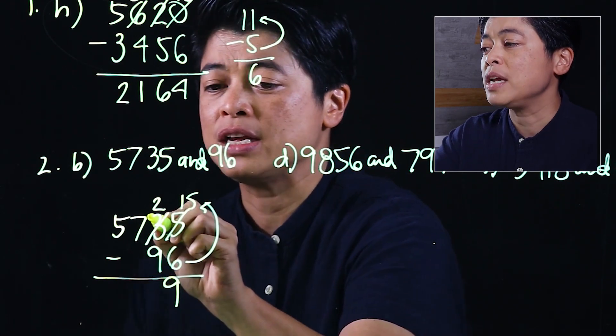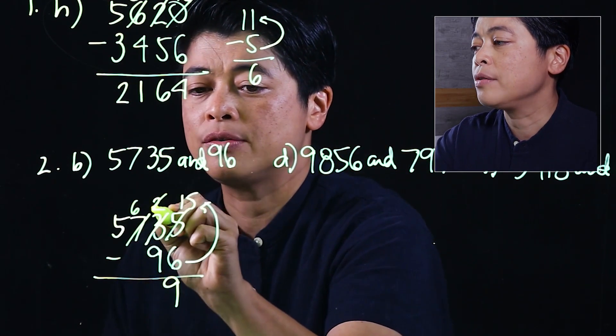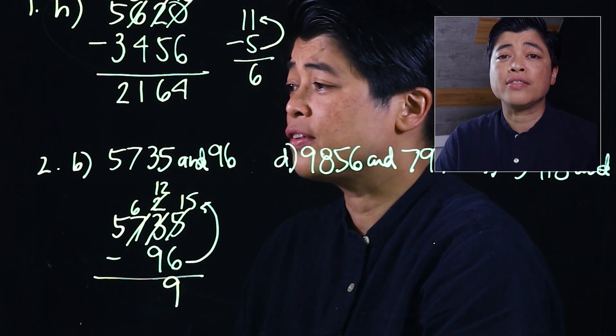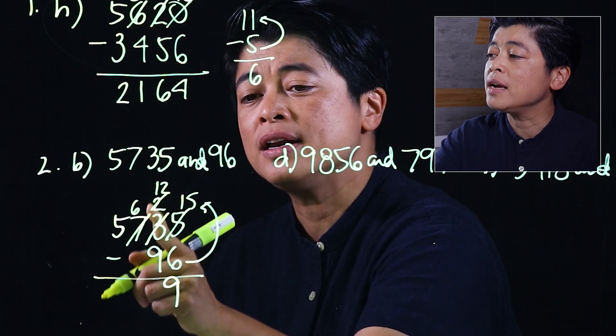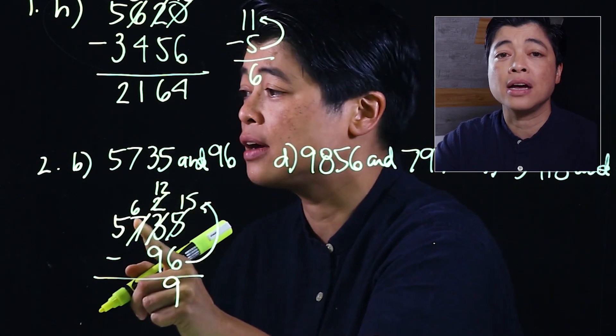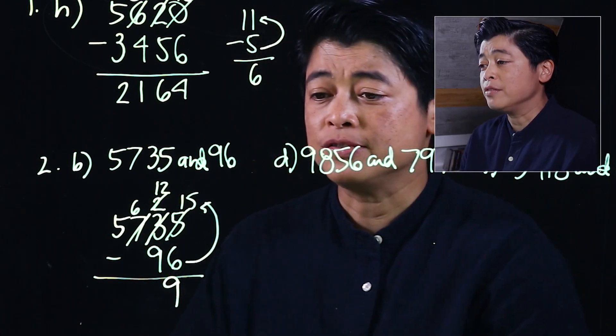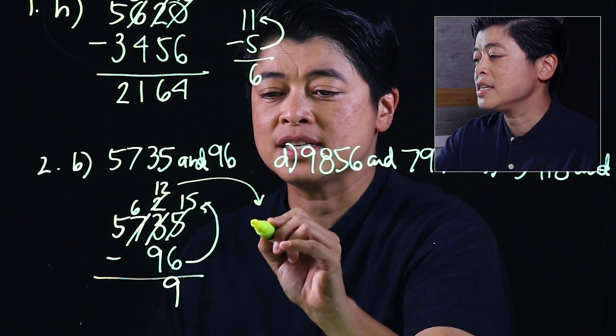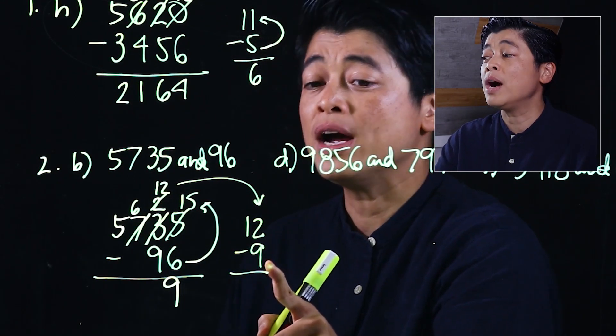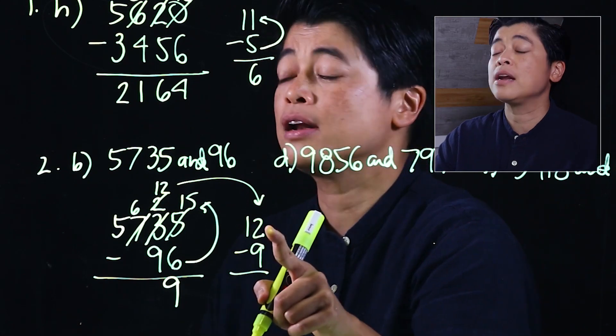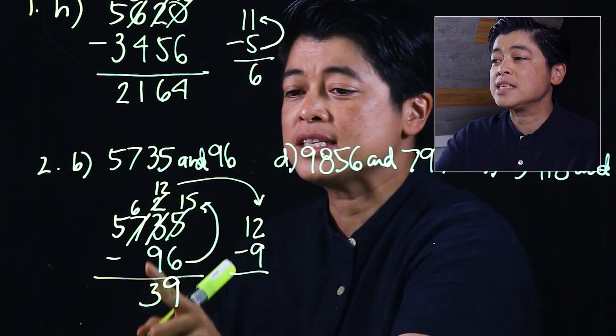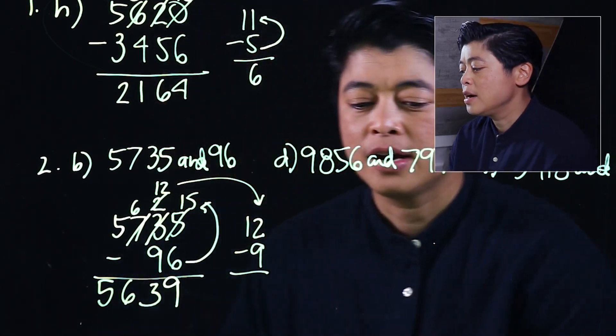We can't take away 9 from 2, so we need to borrow and regroup, making it 12. One thing we want to refrain from doing is just to put a 1 in front of the 2—that's laziness. We need to cancel out that 2 and make it a 12. So 12 minus 9: we start with 9, we need 1 more to get to 10 and another 2 to get to 12. That's 3. 6 minus 0 is 6, which means our answer should be 5639.